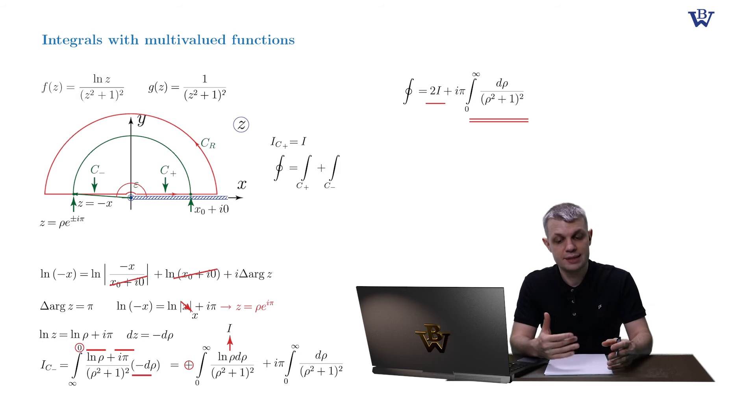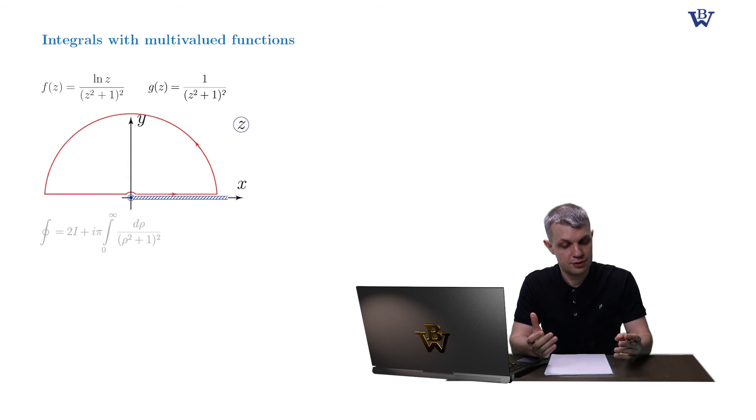And now let's address the poles of our integrand. So the integrand has two second-order poles, z equals plus minus i. Only one of them lies inside our integration contour.